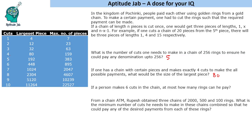Question 3: If a person makes 6 cuts in a chain, at most how many rings can he pay? With 6 cuts, the maximum number of rings that can be paid is 895.